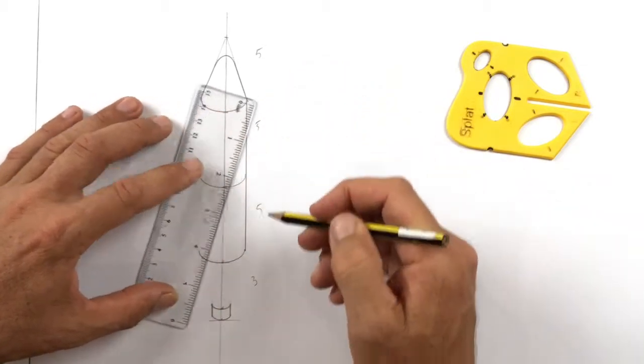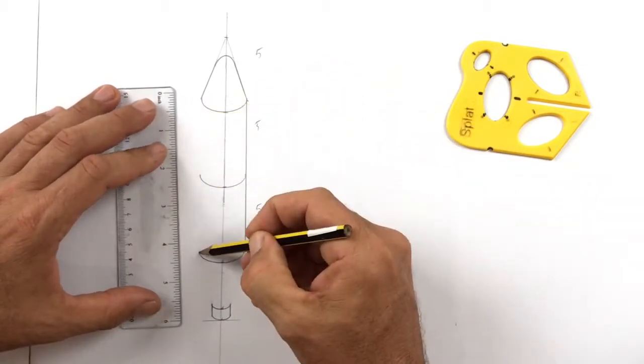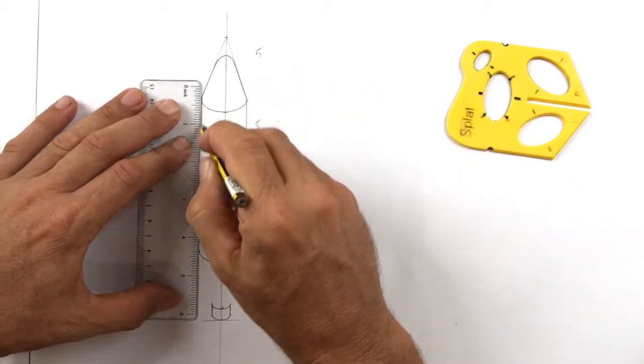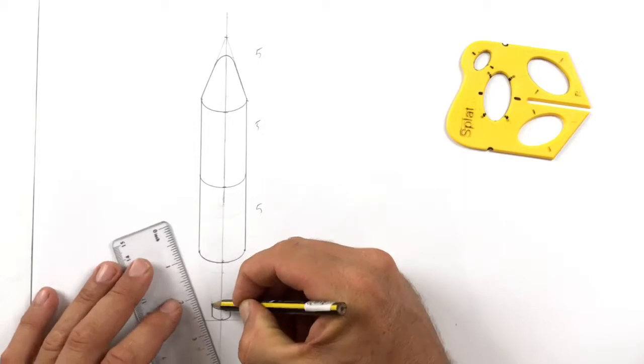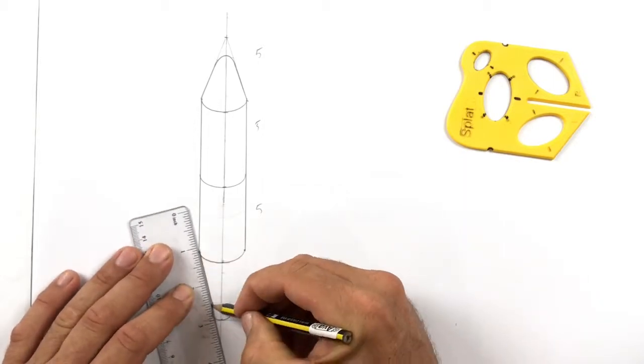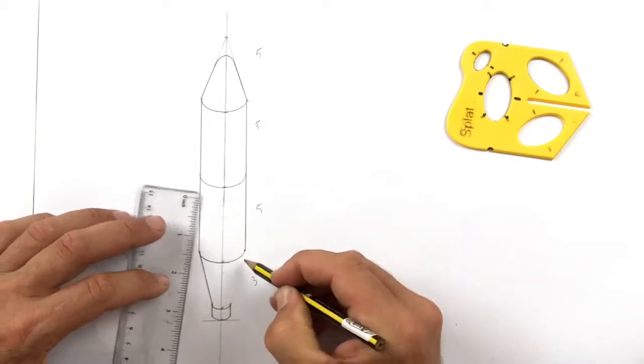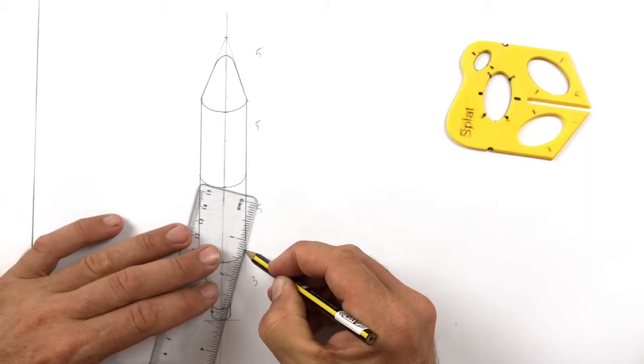Now I'm using a rule to join both sides and you can see we've got two cylinders. Now for the bottom of the bottle we're connecting both the left and right there. So join those dots.